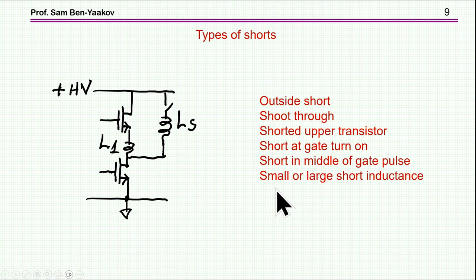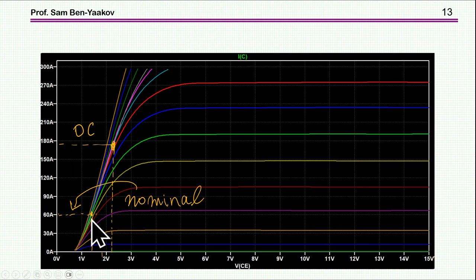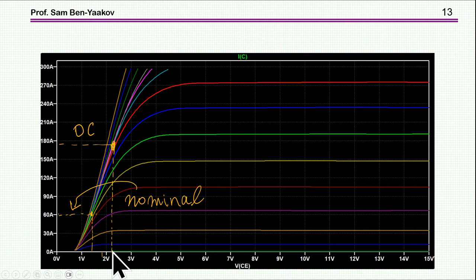We also have to take into consideration the magnitude of the inductance involved with the short. For example, at a nominal operating point, choosing to limit current to around 180 A, we would have about 1.5 volts in the nominal case and something like 2.3 volts at the fault threshold. Our circuit must distinguish between these two voltages, and activate turn-off only if the voltage across the transistor exceeds 2.3 volts. This is just an example for demonstration purposes, not an optimized design.